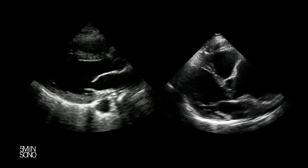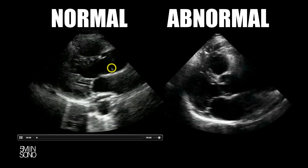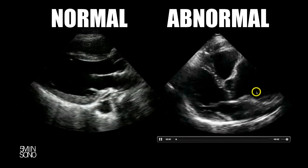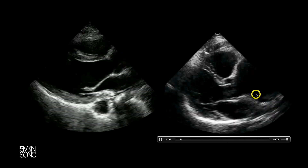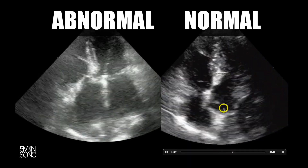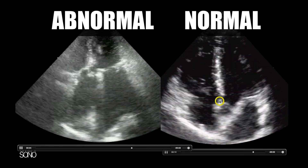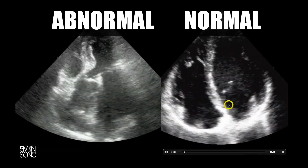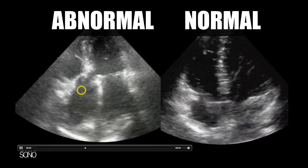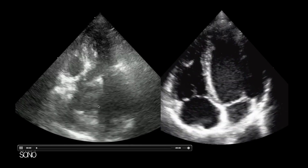Let's start with the thoracic aorta. We have a parasternal long axis view here, and you can see that this ascending aorta is just massive — really big aortic dilation. This is an apical five-chamber view. The fifth chamber right here is the aorta, and you can see this is normal — usually can't see a whole lot of it past the valve. Over here, we have an abnormally enlarged ascending aorta. It's actually about the same size as that left atrium.